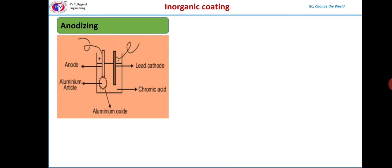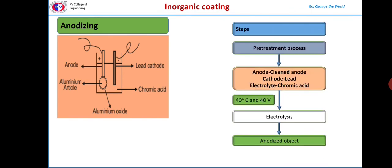Anodizing of aluminum. These are the steps involved in the anodizing of aluminum. It can be done by making it anode in an electric bath containing a suitable acid like chromic acid or phosphoric acid or oxalic acid at 40 degrees centigrade.